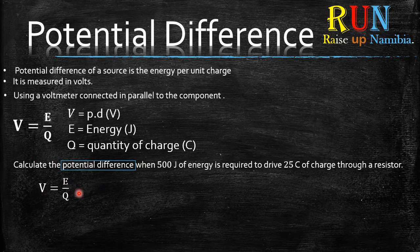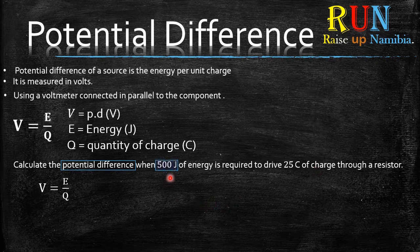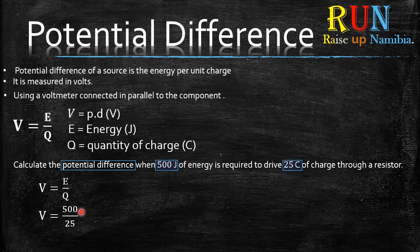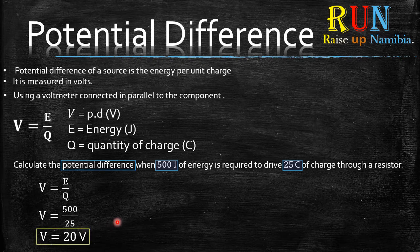In the formula, potential difference V is already the subject, so you just need to check whether you have E and Q in the statement. E is energy and Q is quantity of charge. We have 500 joules and 25 coulombs, so substituting into the formula: 500 divided by 25 gives you 20 volts. That's your final answer.